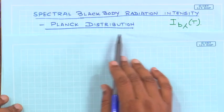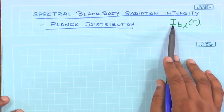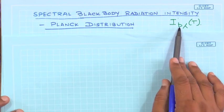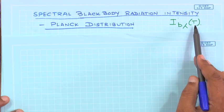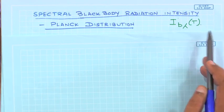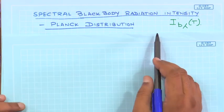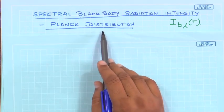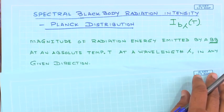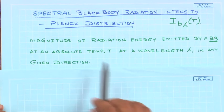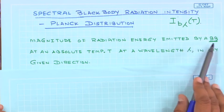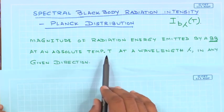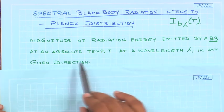Let us start with black body radiation intensity. We denote it as I_b_lambda_T, where I is the intensity, B stands for black body, lambda denotes the wavelength dependence, and T is the temperature, which must be specified. We are going to rely on Planck's distribution to describe this quantity.